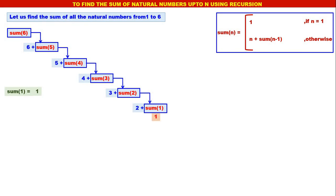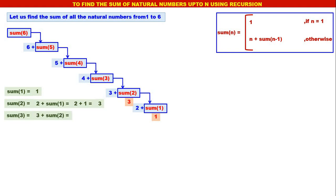Sum of 1 is 1. Now what is sum of 2? Sum of 2 is equal to 2 plus sum of 1. But sum of 1 is 1, therefore it is 2 plus 1, which equals 3. Next, what is sum of 3? It is 3 plus sum of 2. But sum of 2 is 3, therefore it is 3 plus 3, which equals 6.